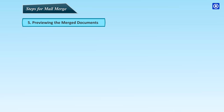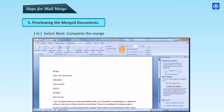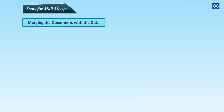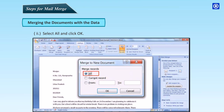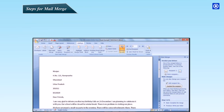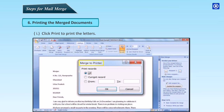Previewing the merged documents: click Next — Preview Your Letters at the bottom of the Mail Merge Wizard. From here you can preview records and select Next. To complete the merge, click Edit Individual Letters under the Merge heading. A Merge to New Document window appears — select All and click OK.